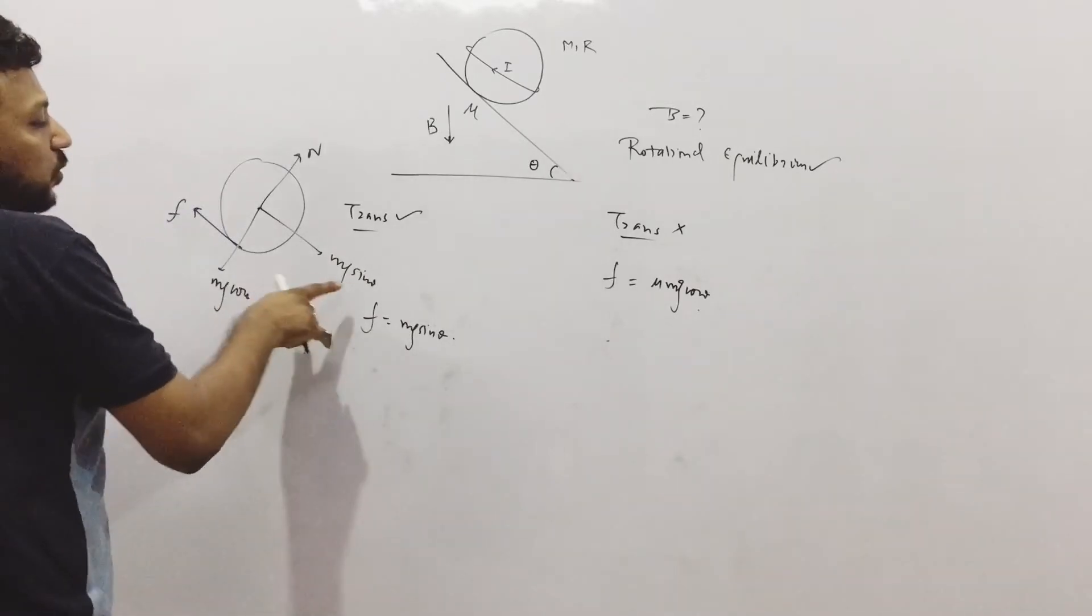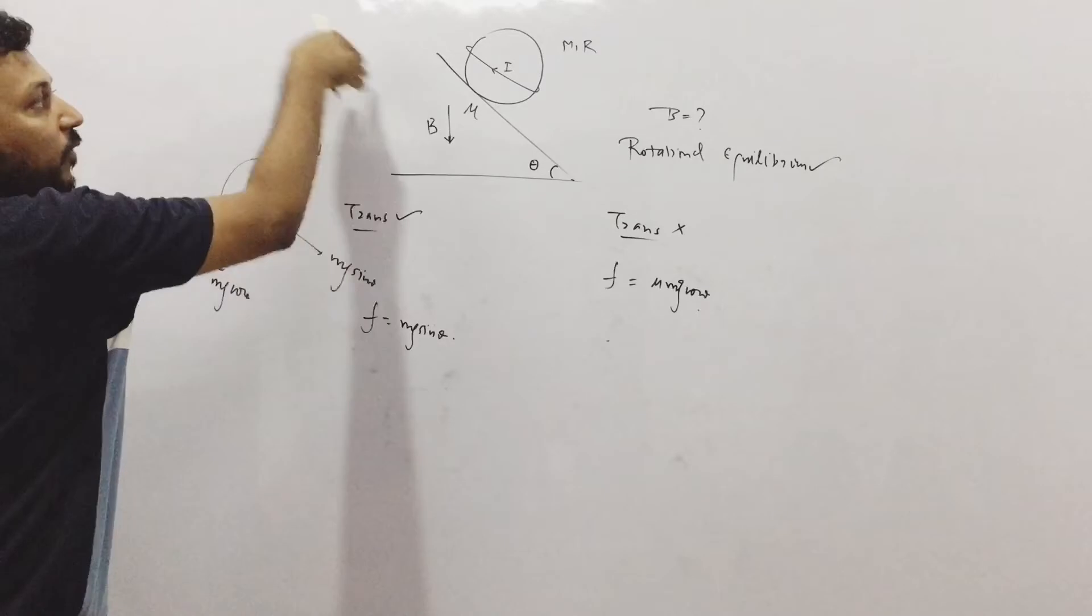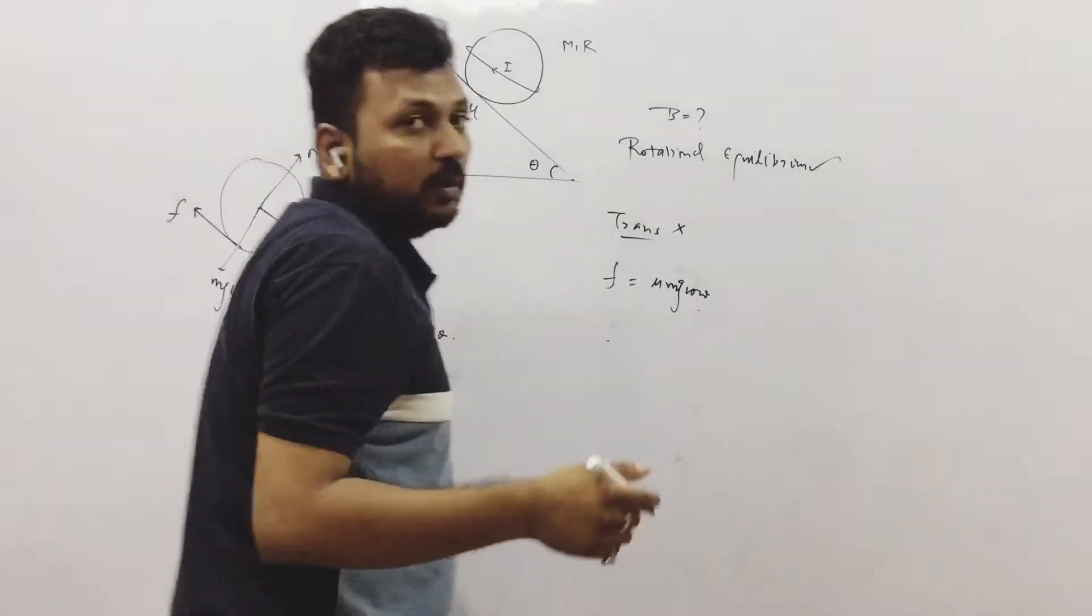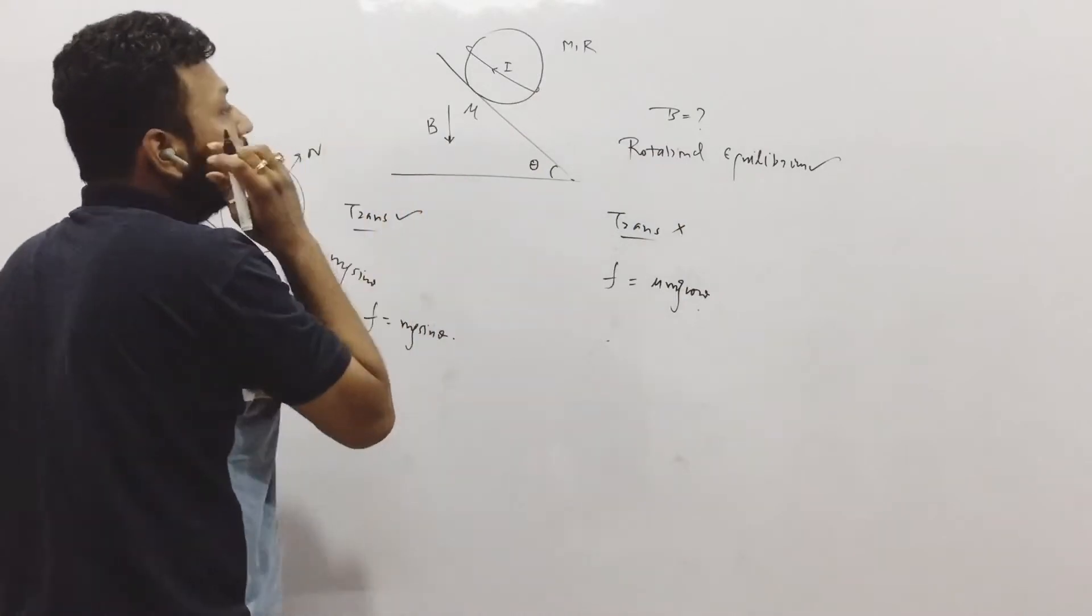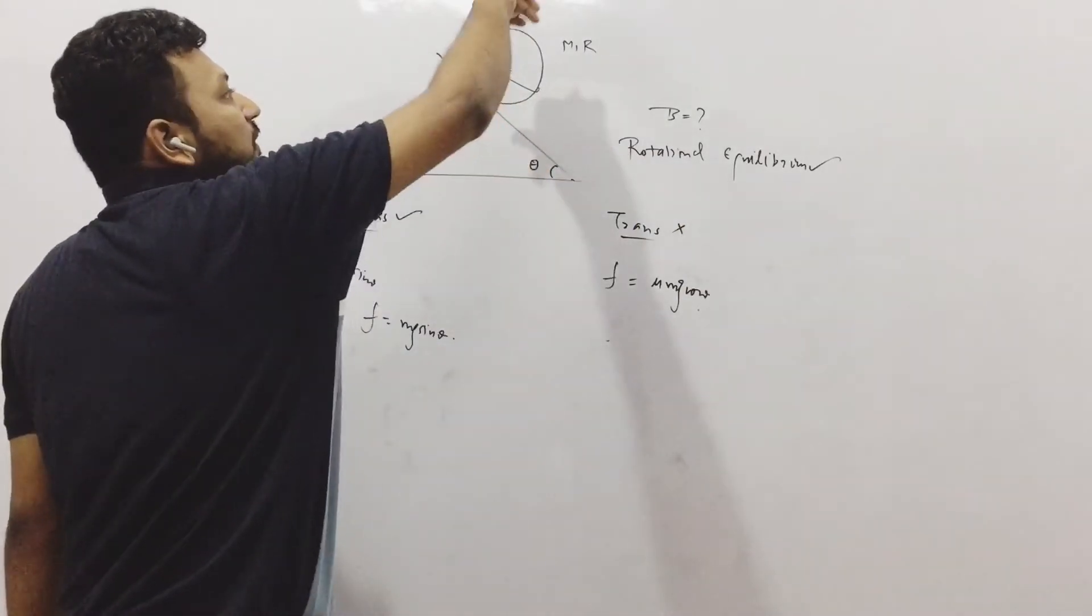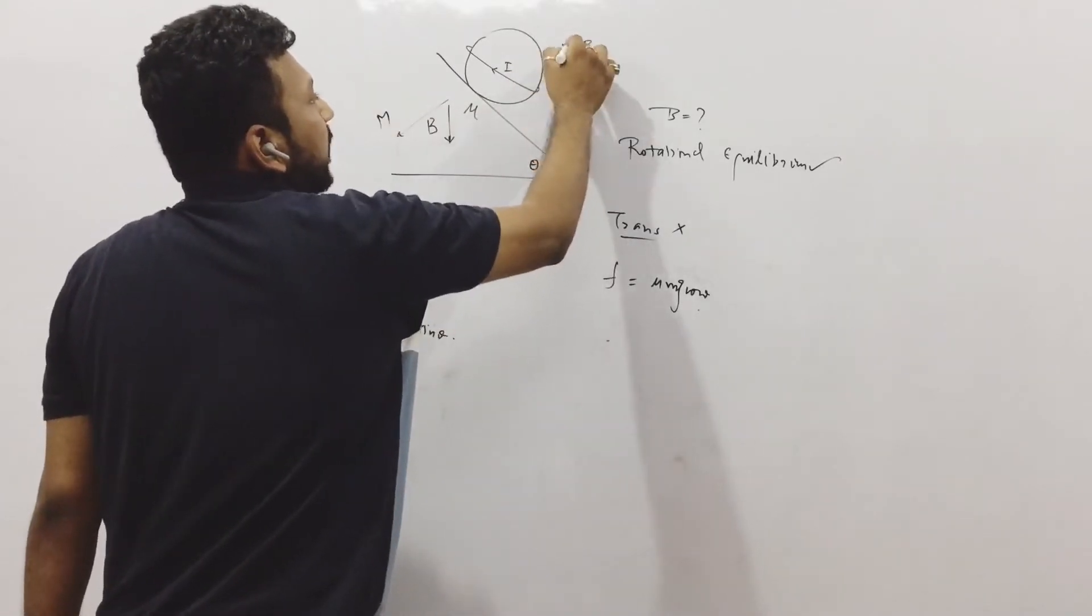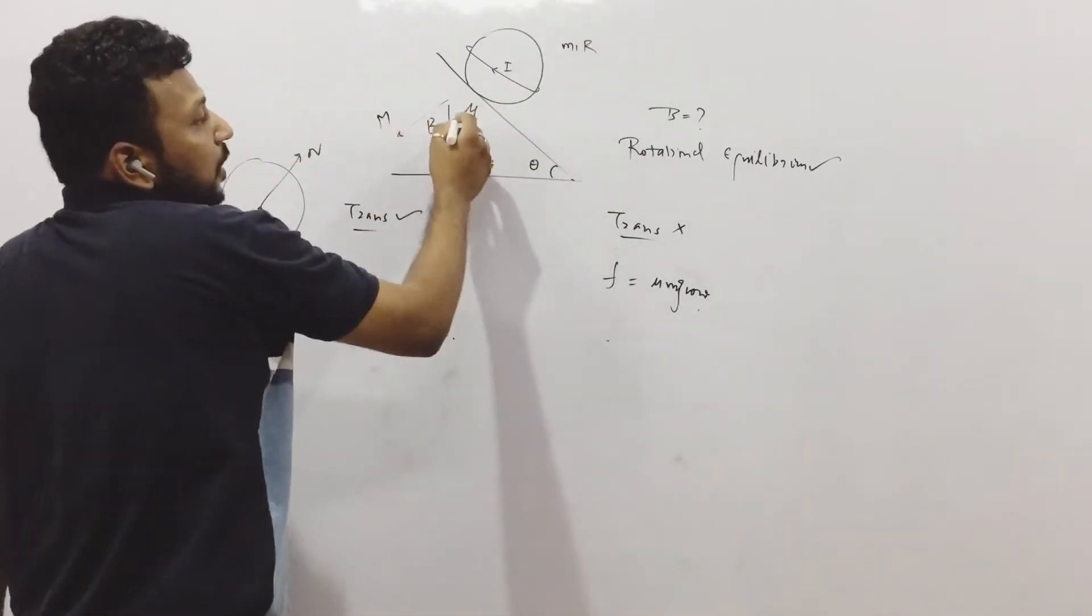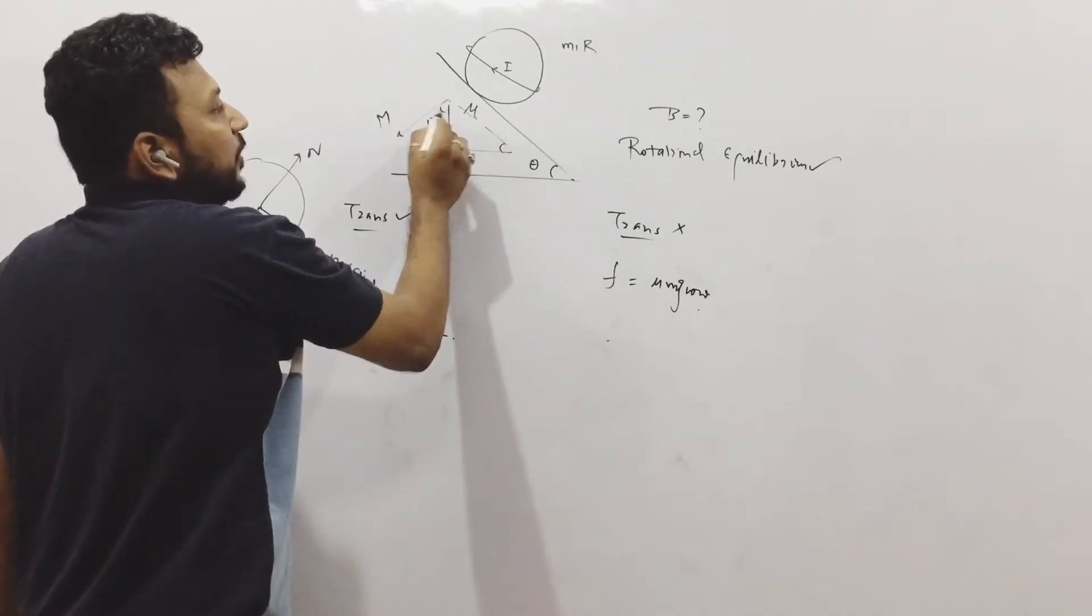So in this case, there is no torque due to these forces. Torque due to force is equal to the torque due to the magnetic field. Now if the current is like this, magnetic moment will be like this. And again, since this angle is theta, 90 minus theta, again it will become theta.